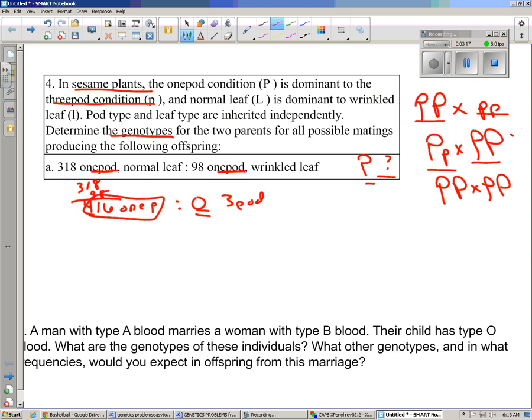Let's talk about leaf shape. We have 318 normal to 98 wrinkle. That's approximately a 3 to 1 ratio, normal to wrinkled. And it says that normal leaf is dominant to wrinkled leaf.